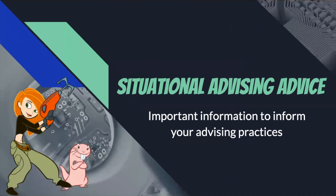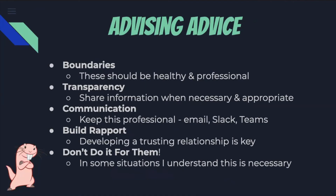Here's some general advice I've learned over my past three years of advising student organizations, specifically fraternities, sororities, and organizations like Dance Marathon. First: creating boundaries. These should be healthy and professional. You should not be texting students at one o'clock in the morning when they have a question — some things can wait until the next day when you're in the office. Avoid getting involved in personal conversations or relationship things that you don't necessarily need to be part of.